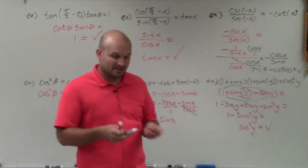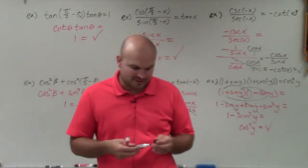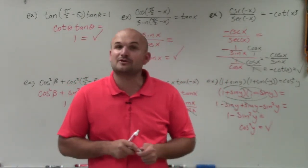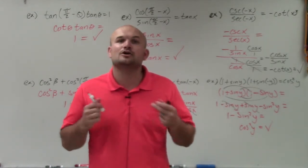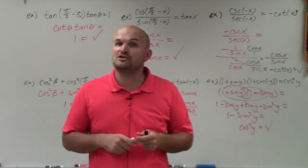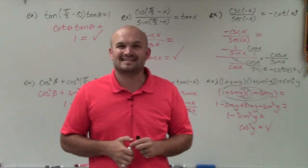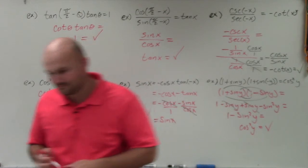So there you go, ladies and gentlemen. Those are just a couple of examples showing how to verify trigonometric identities using co-function and even-odd identities. Thanks.